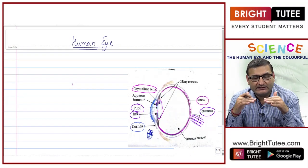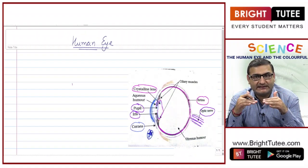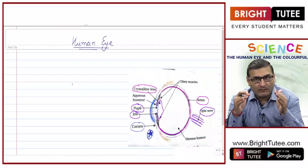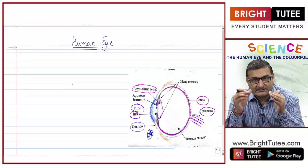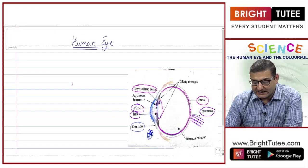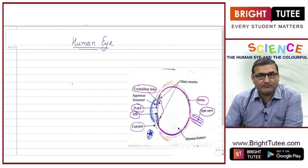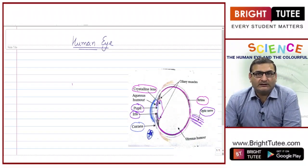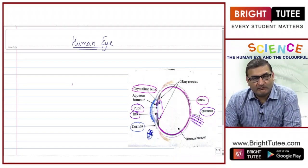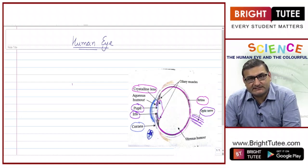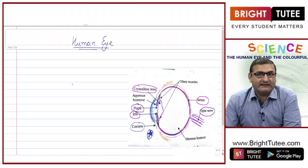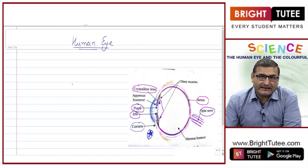The pupil size will be small or big depending on the iris. This is very important — the iris along with the pupil controls the amount of light entering our eye. We must have experienced this: when we are in the sun and suddenly go into a shade or cinema hall.